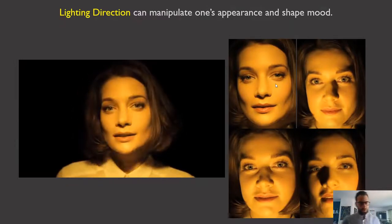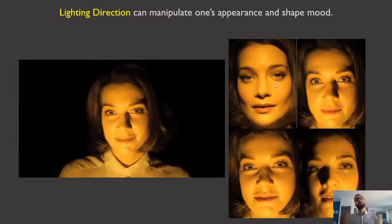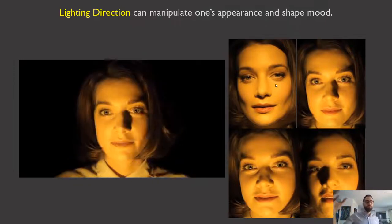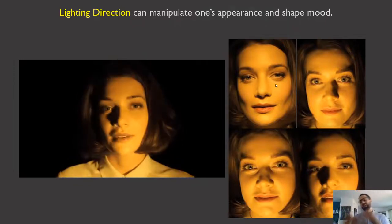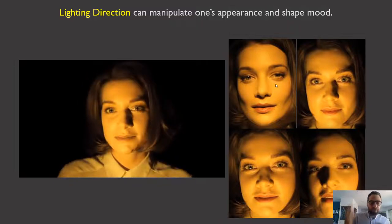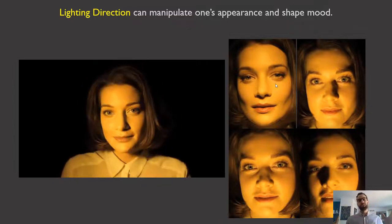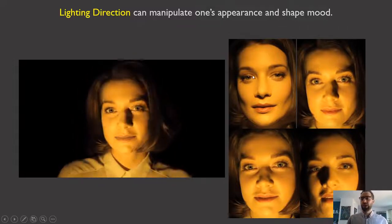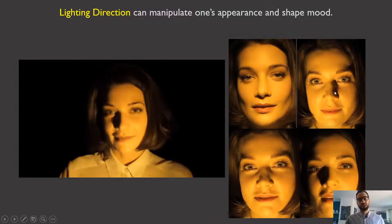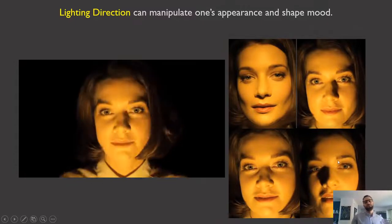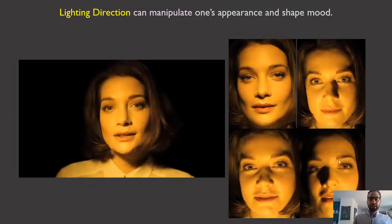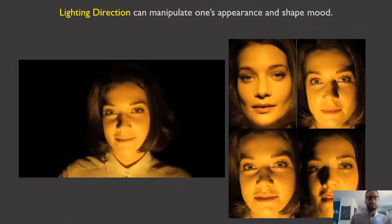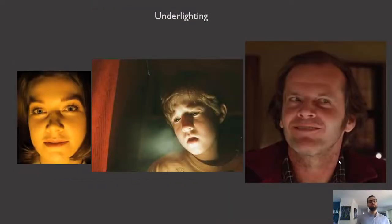So that's three-point lighting. We can also talk about lighting direction — that is, where a light comes from and what effect that has. This GIF demonstrates the way in which lighting direction can radically change a person's appearance. You have a high direction, a side direction, a low direction, and another side direction from the left. These images produce an entirely different appearance for a person, and they have conventions in genres and certain ways of making films.